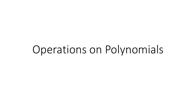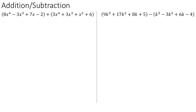We're going to start this unit with an introduction to the different arithmetic operations that you can do on polynomials. When adding and subtracting polynomials, the rule to follow is the rule of combining like terms. So we need to see which terms between the two polynomials are like terms, and then we'll add the coefficients together accordingly.